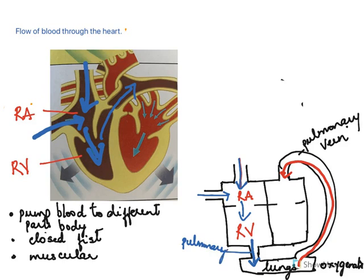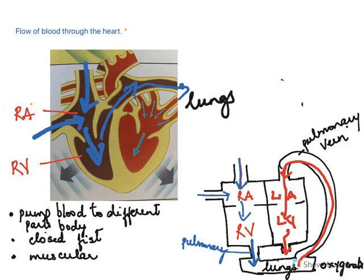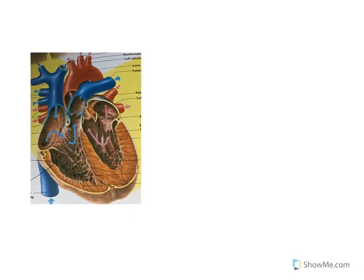Once the oxygenated blood comes back into the heart, it enters the left auricle, then travels to the left ventricle, and from the left ventricle through the aorta it leaves the heart to the different parts of the body. So to summarize: the pulmonary artery carries deoxygenated blood to the lungs; the lungs oxygenate it; the pulmonary vein brings it back to the heart; and the aorta sends it to the rest of the body.